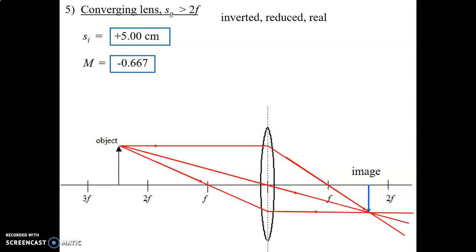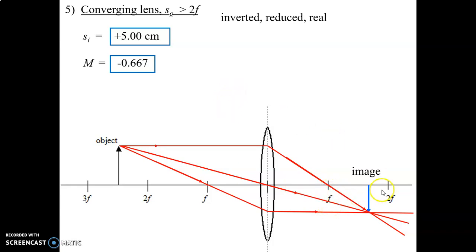Let's look at our predictions. We predicted inverted — has it been inverted? Of course, this is pointing up, that's pointing down. Has it been reduced? You should be able to see that this image is smaller than the object. What about being real? One of the definitions is if you could put a screen there, could you get an image onto the screen? Imagine this is a source of light and the rays of light are going through the lens — if you put a screen over here, would these rays of light actually converge onto the screen? Yes, they would. That's how we know there's a real image.